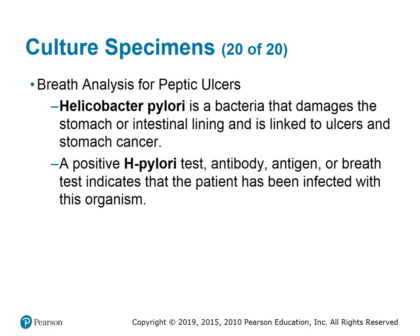Helicobacter pylori is a bacteria that damages the stomach or intestinal lining and is linked to ulcers and stomach cancer. It is a common but serious bacteria. A positive H. pylori test — antibody, antigen, or breath test — indicates that the patient has been infected with the organism.